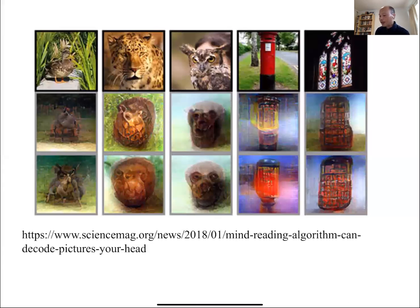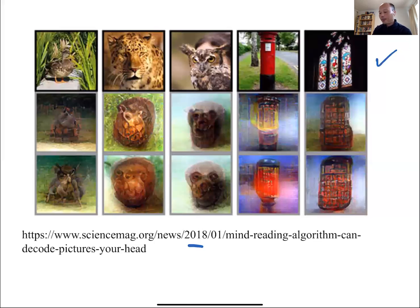We talked a little bit about mind reading. These are some more recent results from around 2018 showing the state of the art. On the top row you see photos that subjects were exposed to. A convolutional neural network was trained from previous MR data where people were exposed to visual building blocks, then it tried to reconstruct what the person was actually seeing. You can see it does well in terms of overall shape and even some texture and colors, but we're still not quite at the point where just by looking at someone's brain you can tell exactly what they're looking at.